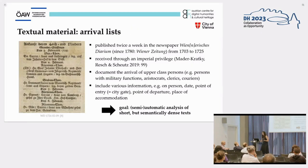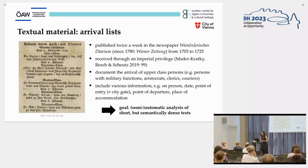Let me introduce you to the textual material under investigation here, namely the so-called arrival lists, one of which is shown here on the left. These lists were published twice a week in the Austrian newspaper Wienerisches Diarium from 1703 to 1725, where the publishers had access to them through an imperial privilege.